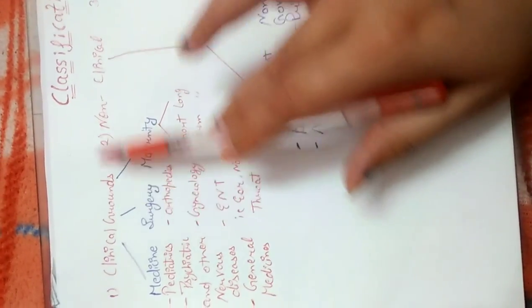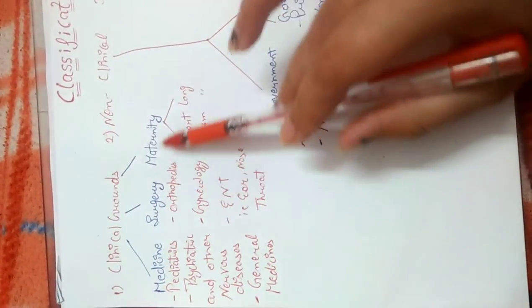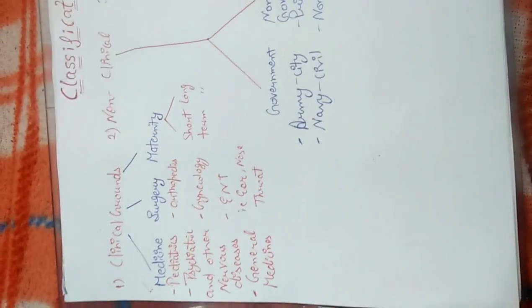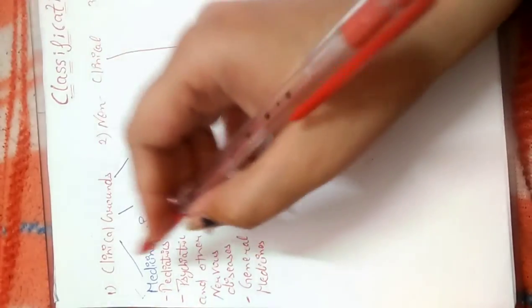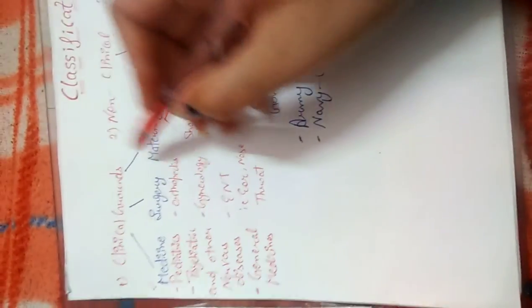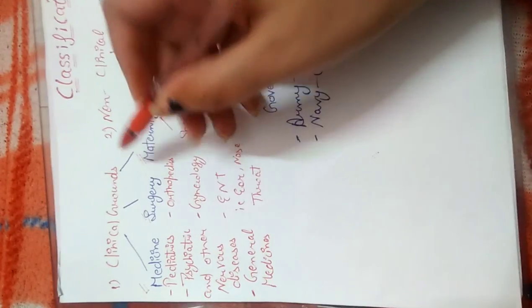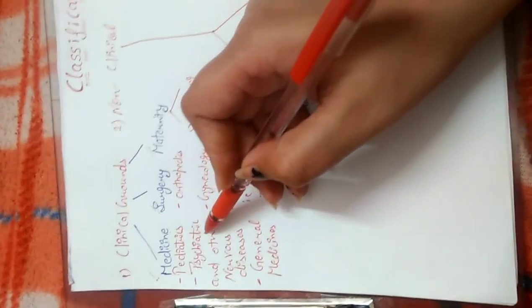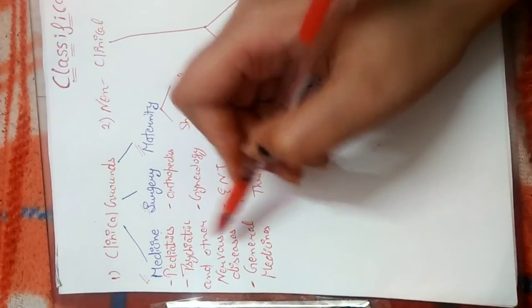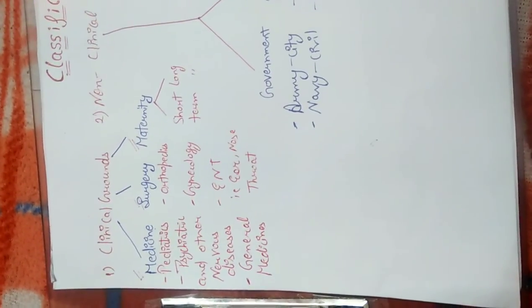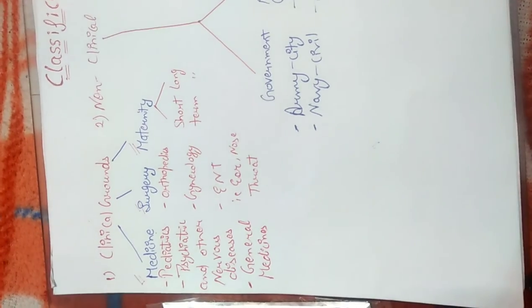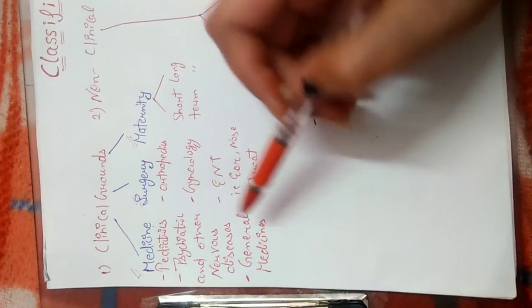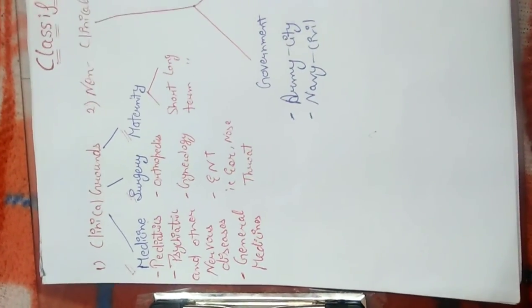On the basis of clinical grounds, hospitals are divided into three categories: first, on the basis of medicines; second, on the basis of surgery; third, on the basis of maternity. On the basis of medicines, we have hospitals like pediatrics for children, psychiatric for nervous diseases and depression, and general medicine hospitals for fever, etc.